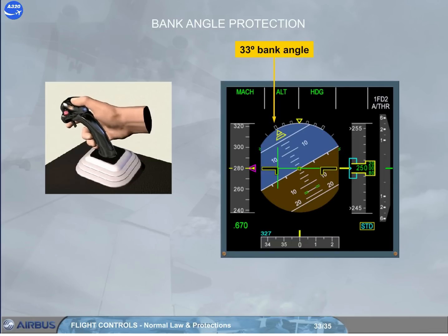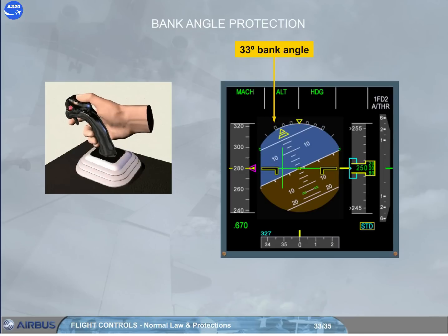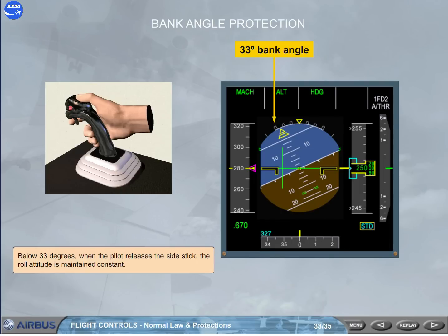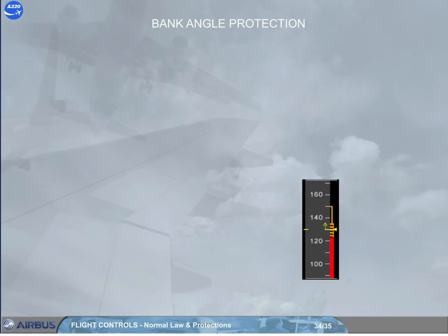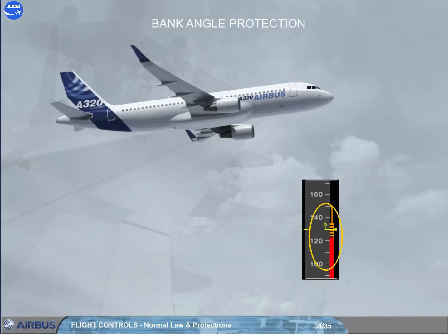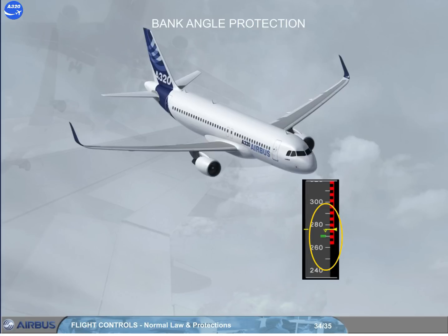Below 33 degrees, when the pilot releases the side stick, the roll attitude is maintained constant. With angle of attack protection active, the bank angle is limited to 45 degrees and no further. With high speed protection active, the system maintains a positive spiral stability to 0 degree bank angle so that if the side stick is released, the aircraft returns to wings level. The bank angle limit is also reduced from 67 to 40 degrees.